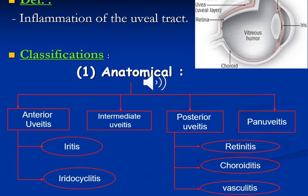There are many different classifications for uveitis. The first is anatomical classification according to the site of inflammation. It could be anterior uveitis, intermediate uveitis, posterior uveitis, or pan uveitis. Anterior uveitis refers to inflammation of the iris or ciliary body. Intermediate uveitis refers to inflammation of the pars plana of the ciliary body. Posterior uveitis means inflammation of the retina, choroid, or retinal blood vessels. Pan uveitis means inflammation of the whole uveal tissue.